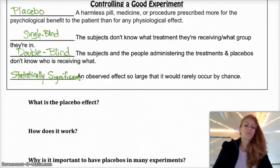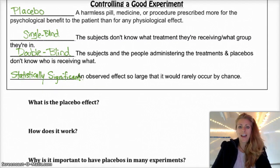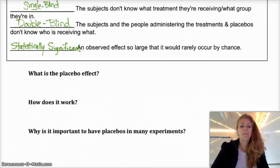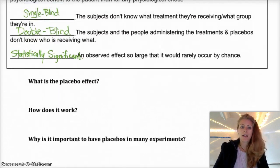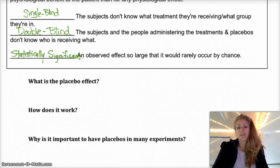So we already talked about the placebo effect and how it works. The brain is a powerful thing. The placebo effect is the effect your body has when you take a placebo, and it's important to have placebos so that you can reduce the placebo effect in your experiment.